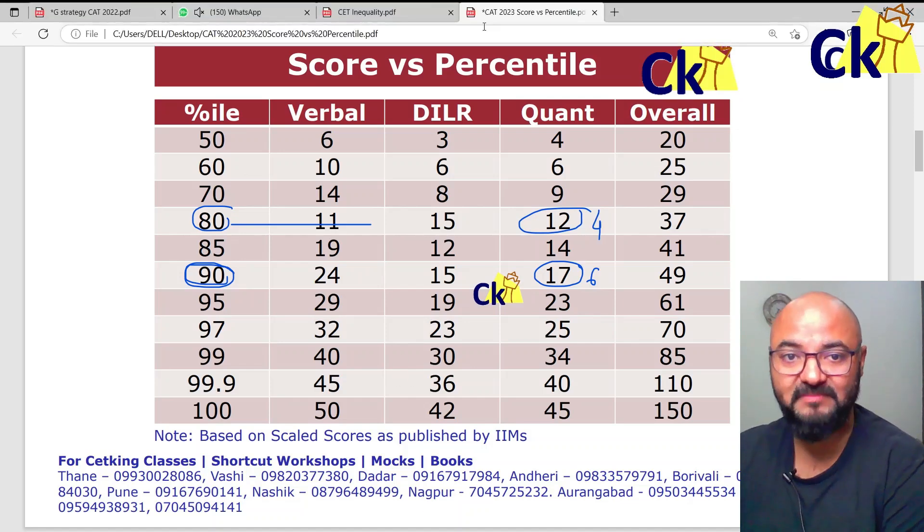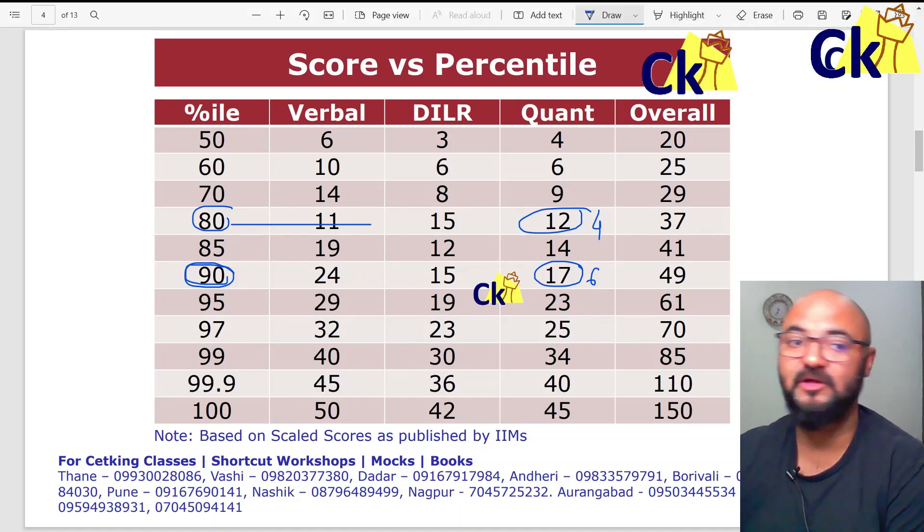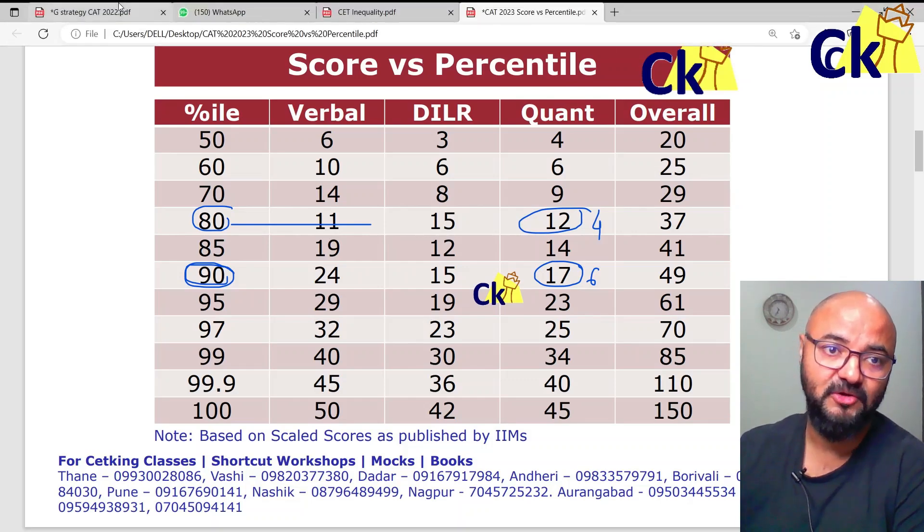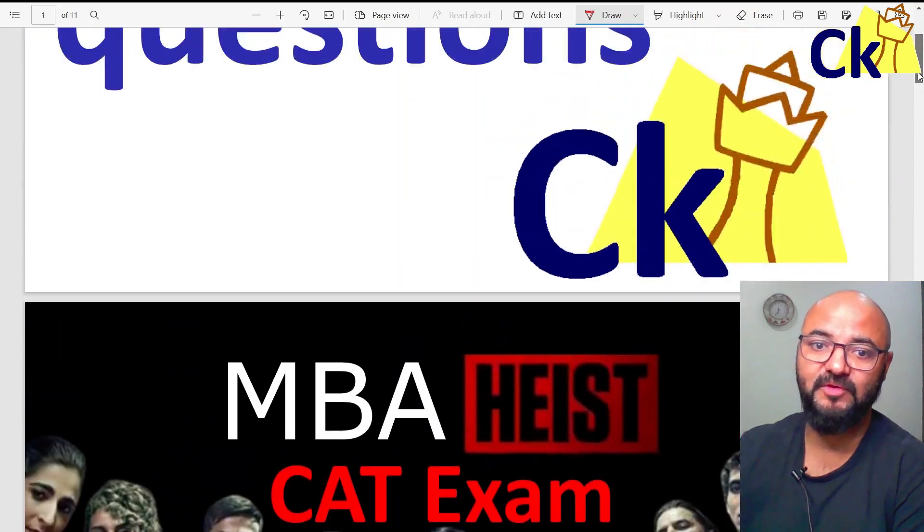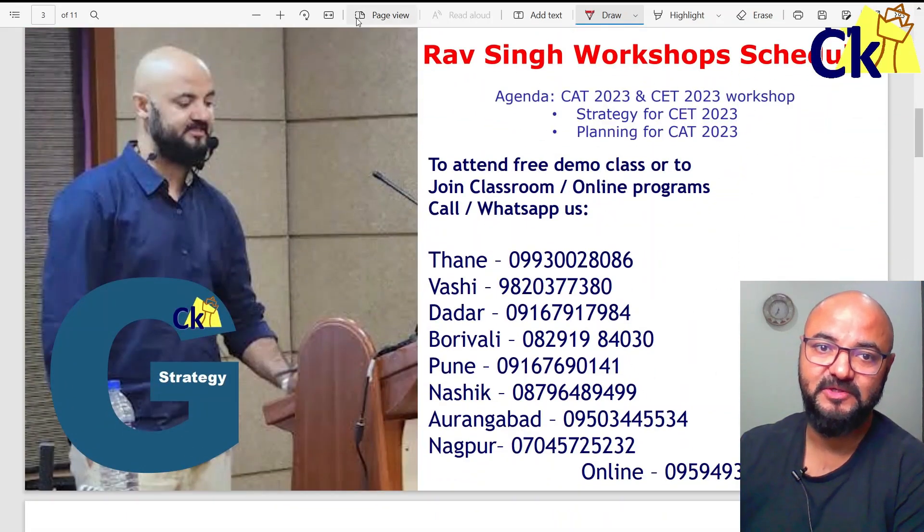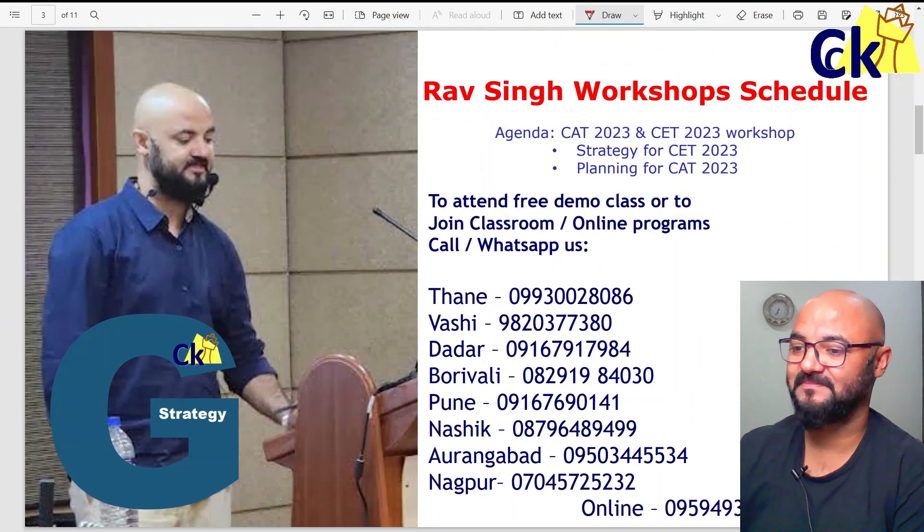We are launching our program. We are going to do all these good things, all these shortcuts. In case you want to join, you can just call or WhatsApp any of the numbers given here to join our program. All the best. This is called G-Strategy, Garibachcha.